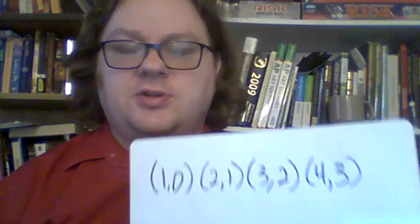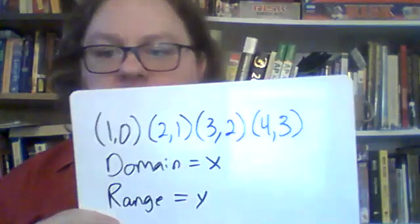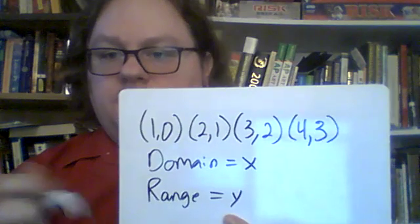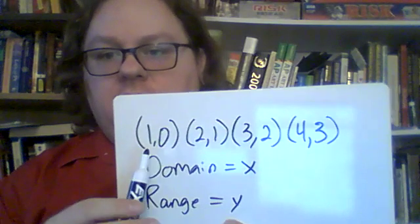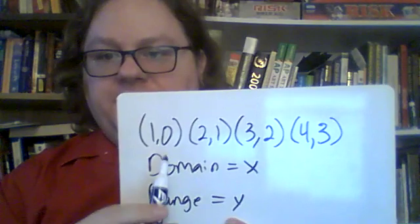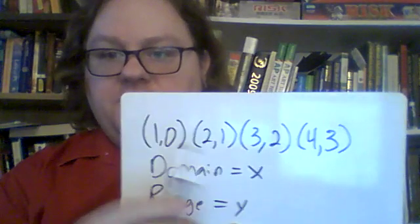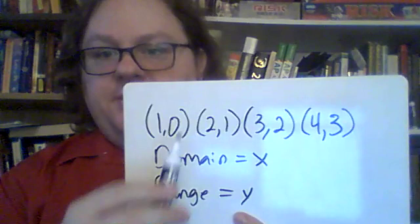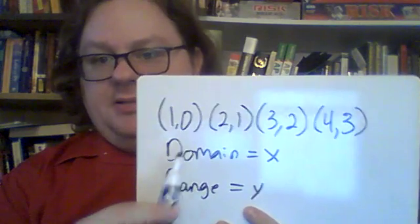Okay, next we're going to talk about domain and range. Domain equals all the x's and range you guessed it equals all the y's. So remember that in every point it goes x comma y so this is 1 comma 0. The domain is 1 the range is 0. The domain is 2, domain 3, domain 4 so the domain of this chart is 1, 2, 3, 4. The range is 0, 1, 2, 3.